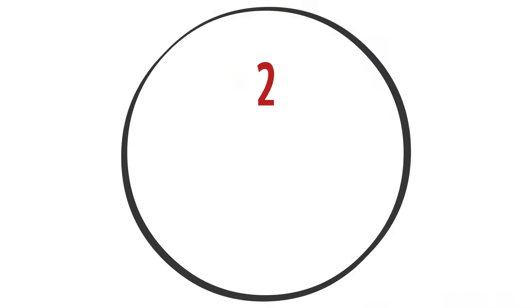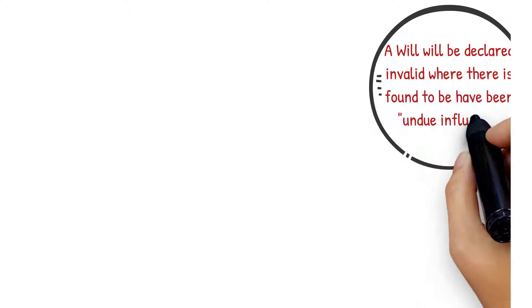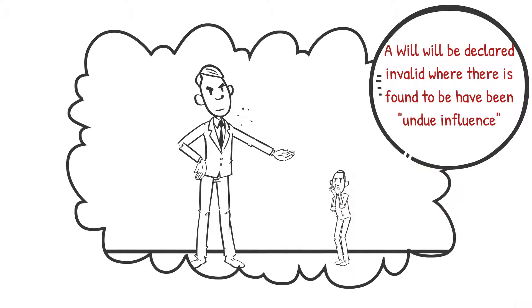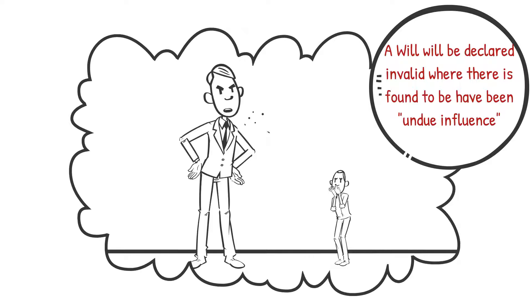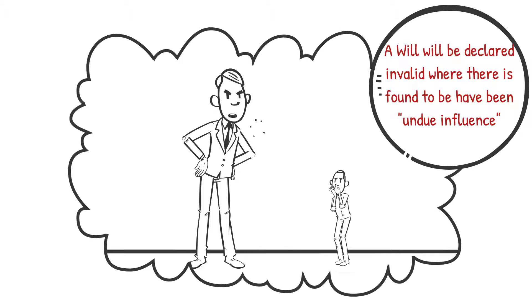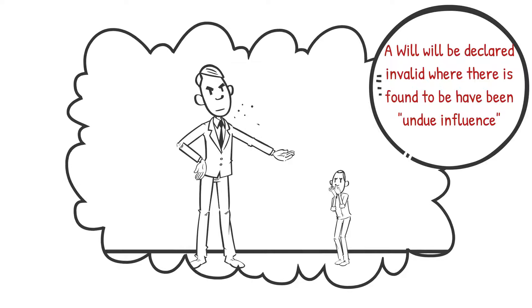Undue Influence. A will can be declared invalid where there is found to have been undue influence on the testator. To avoid any challenge along these lines, it is important that a will is made voluntarily and not under duress and reflects the testator's true wishes.